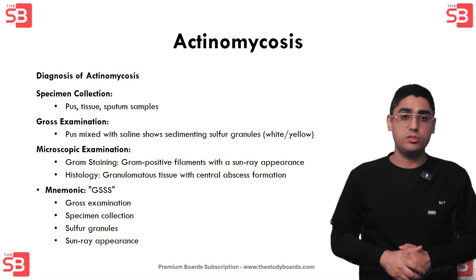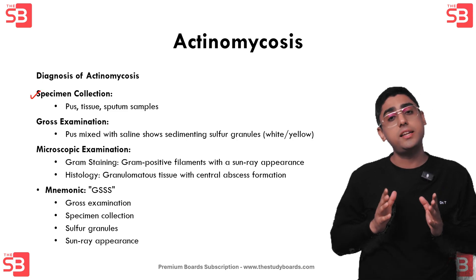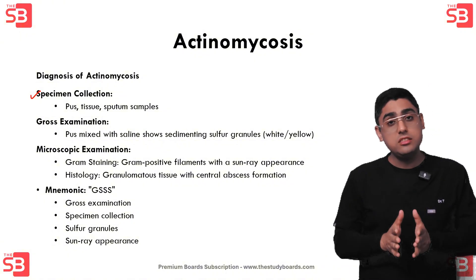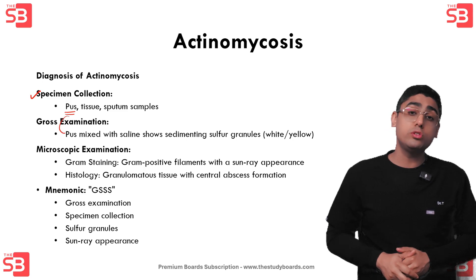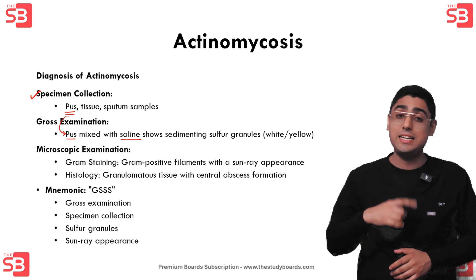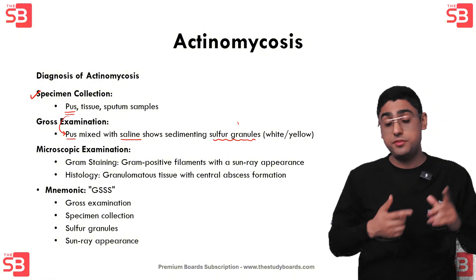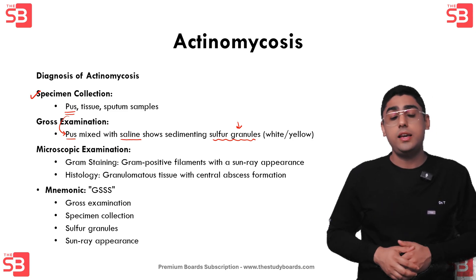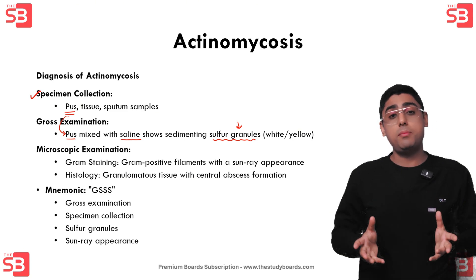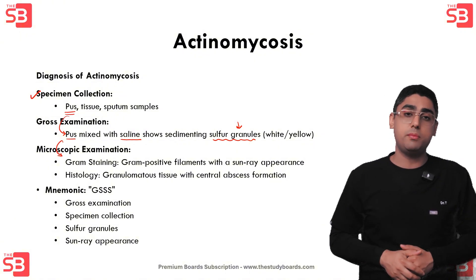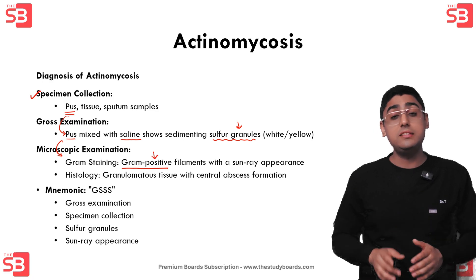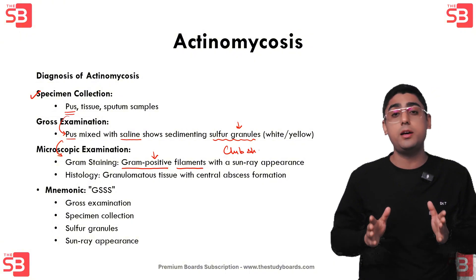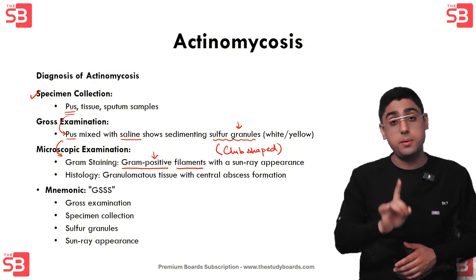To diagnose actinomycosis, the first step is specimen collection — collecting pus, tissue, or sputum samples. Then gross examination is performed: mix the pus with saline in a test tube, and the sulfur granules will sediment at the bottom, appearing as white or yellow particles. Following gross examination, microscopic examination is done using Gram staining, which reveals thin Gram-positive filaments surrounded by club-shaped structures.